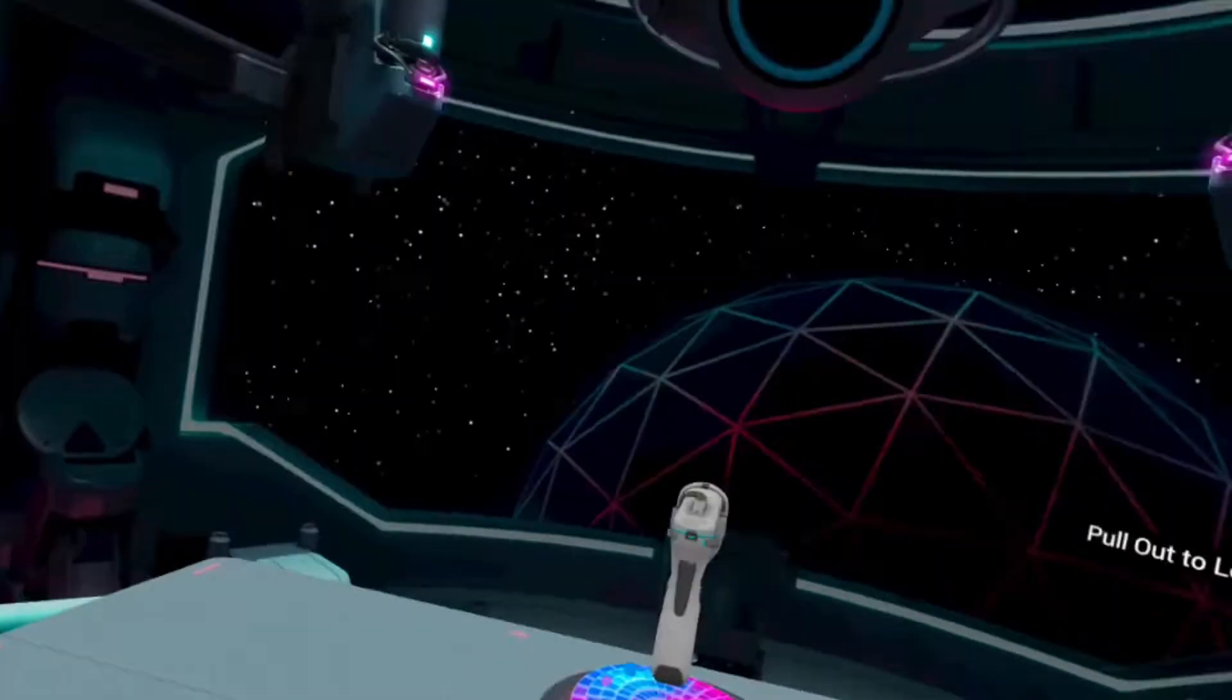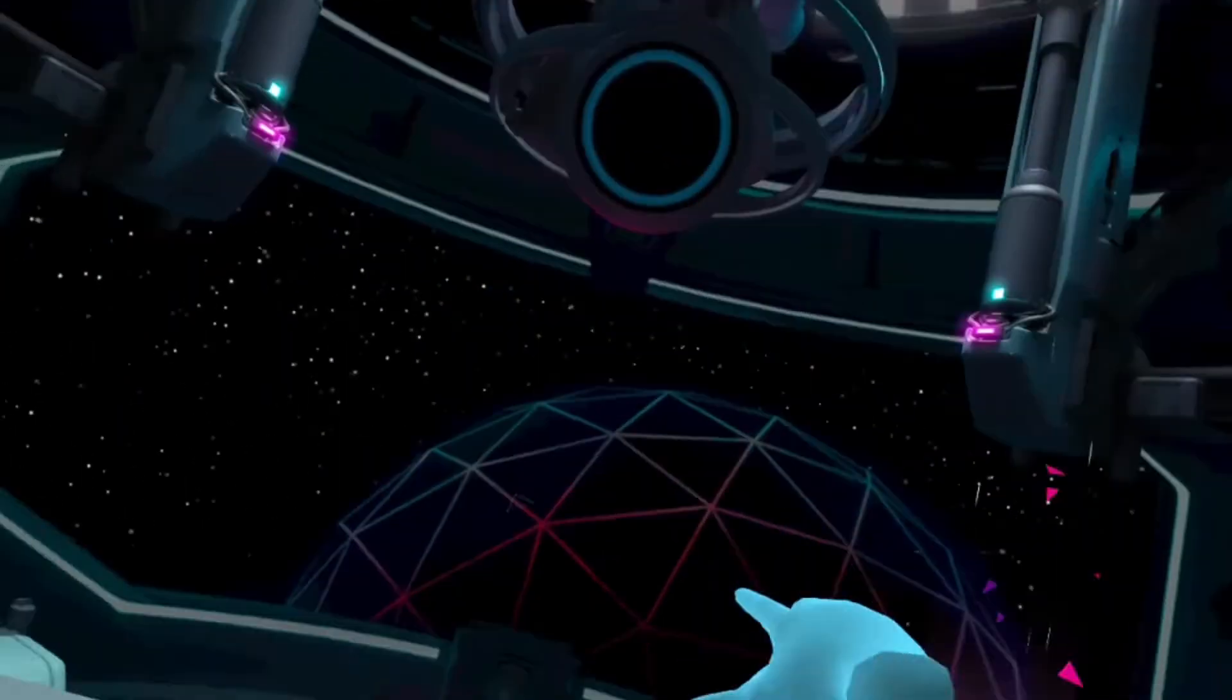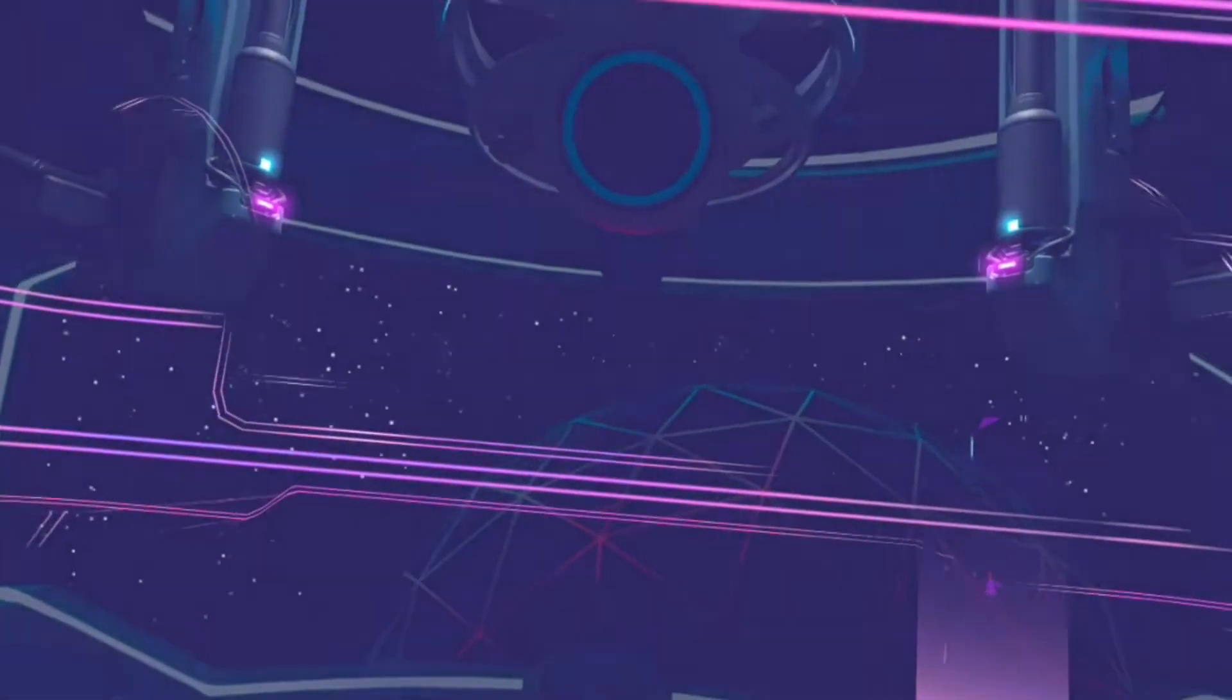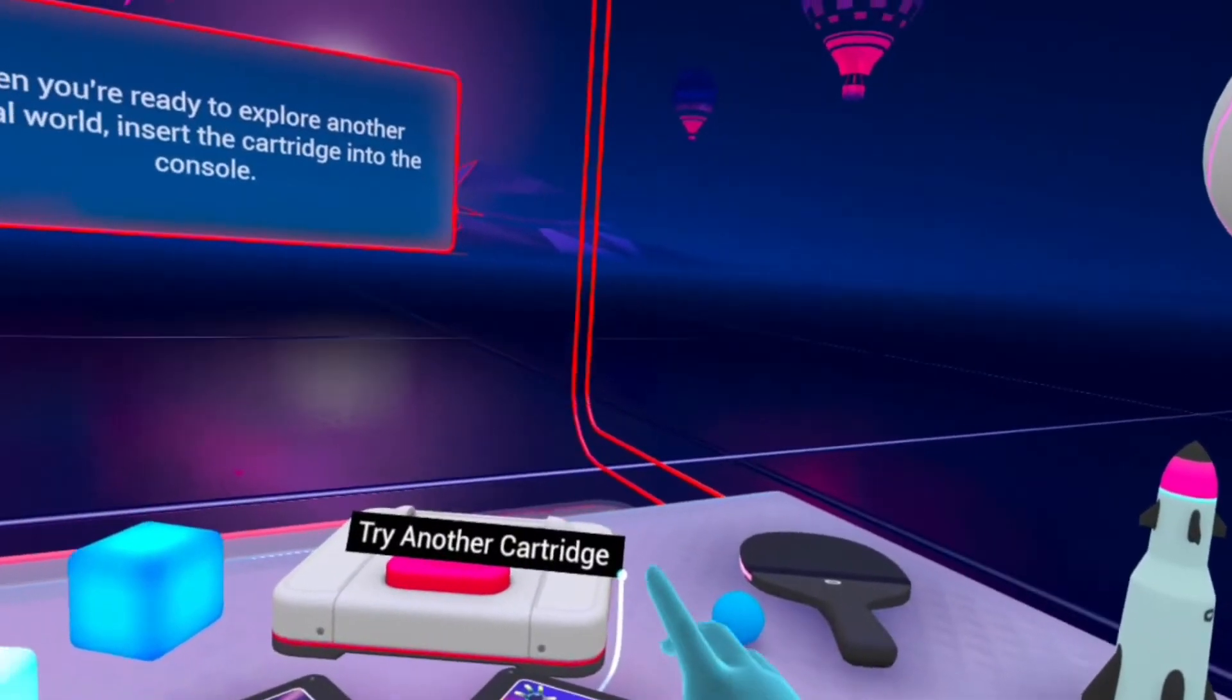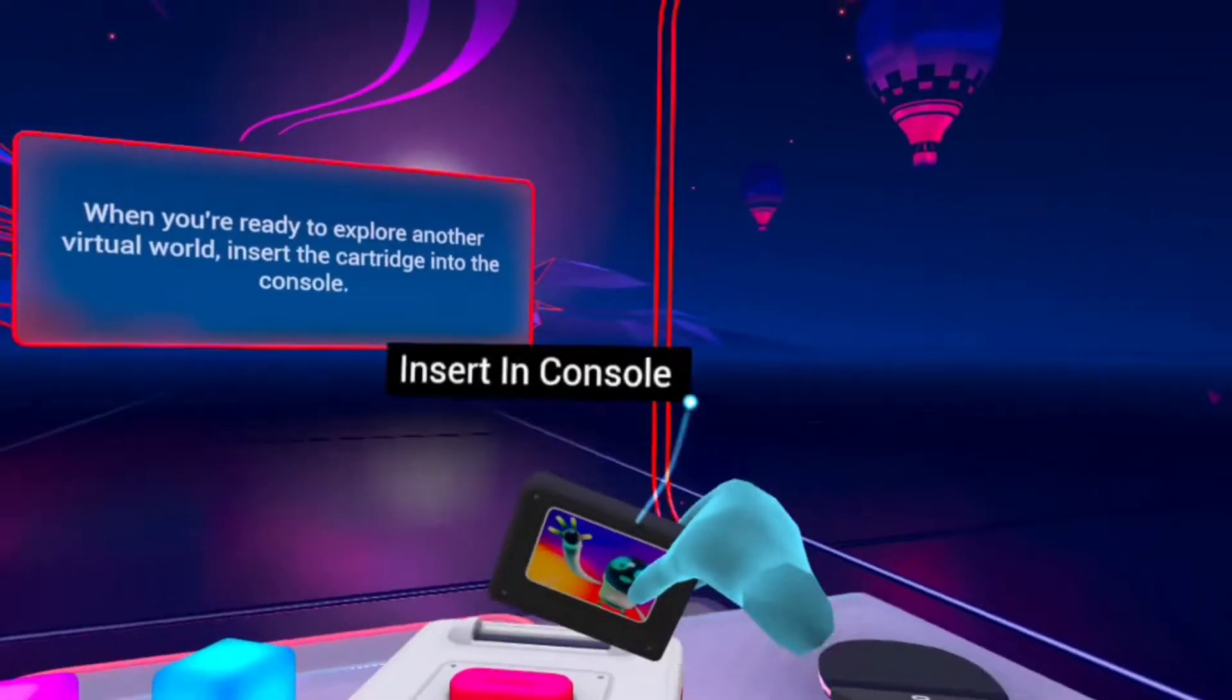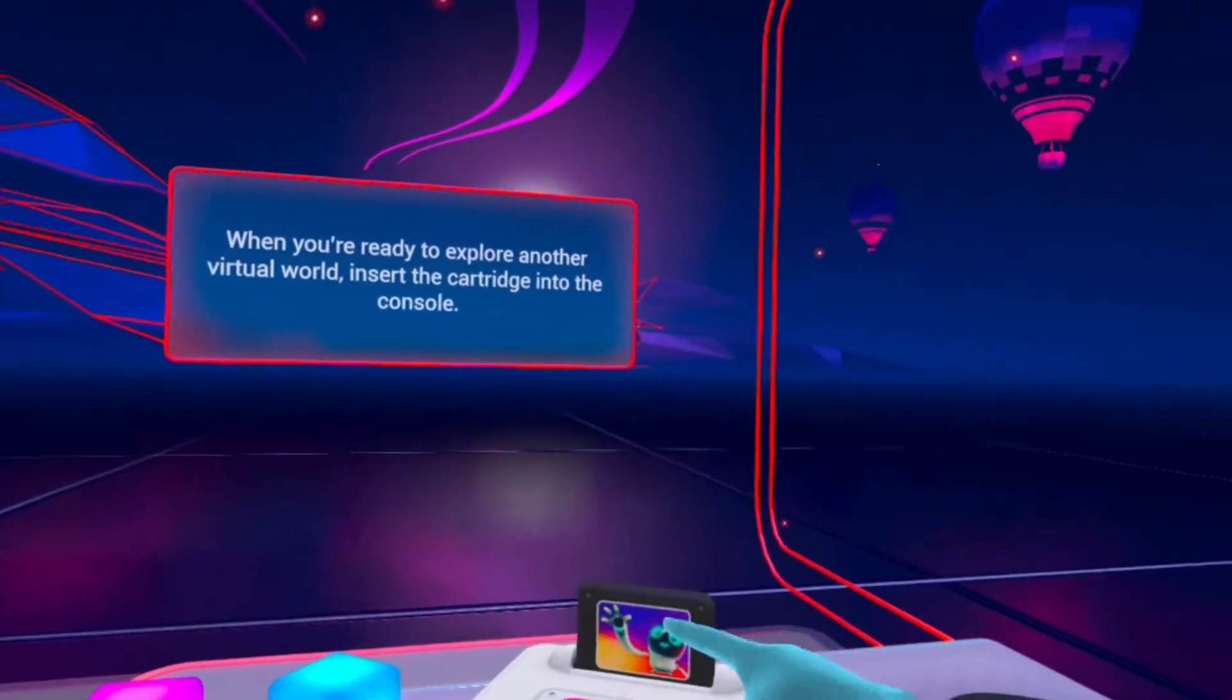Anyways, then when you're done, you just grab the cartridge and go whoop, and it'll take you back to the first level. When you're ready to explore another virtual world, insert the cartridge into the console. This one right here lets you dance with the robot, so let's put this one in. I'll show you guys what it does.